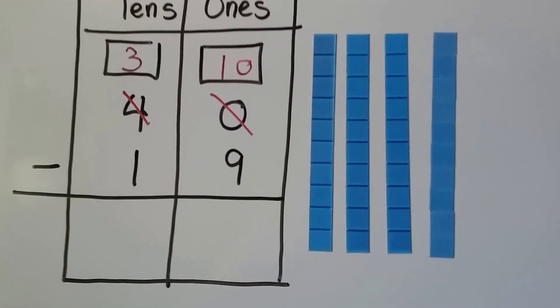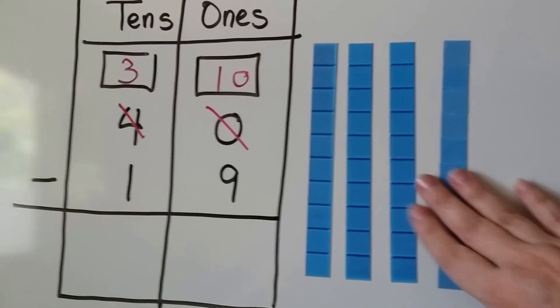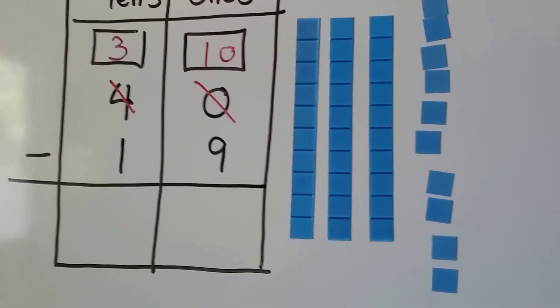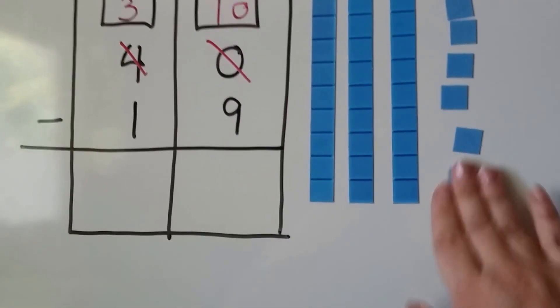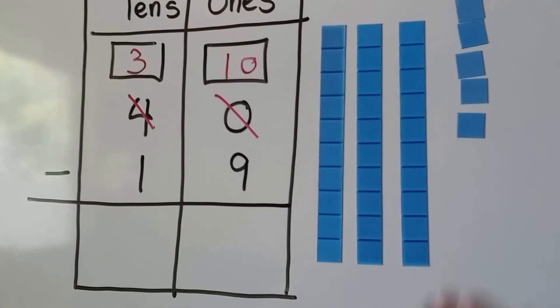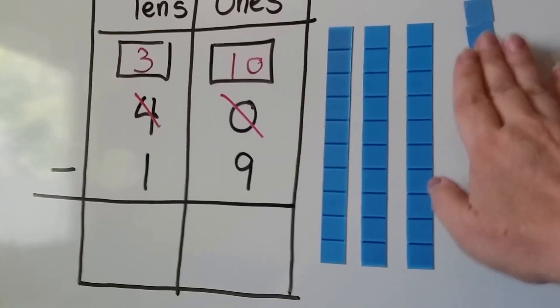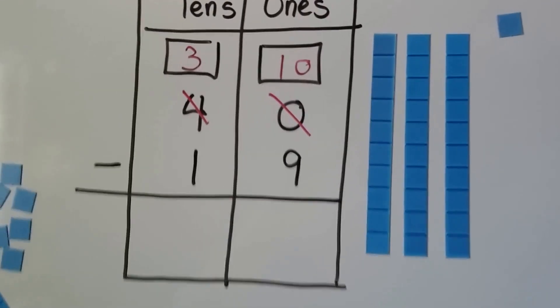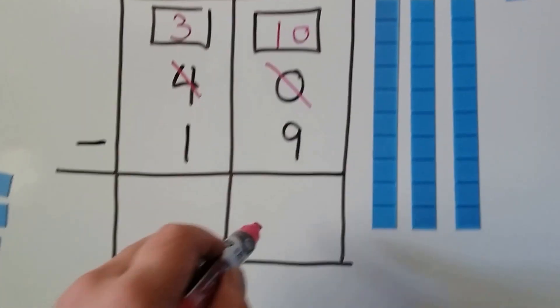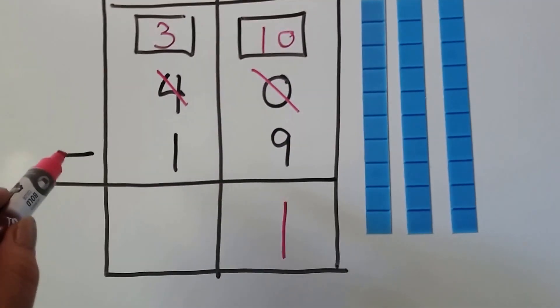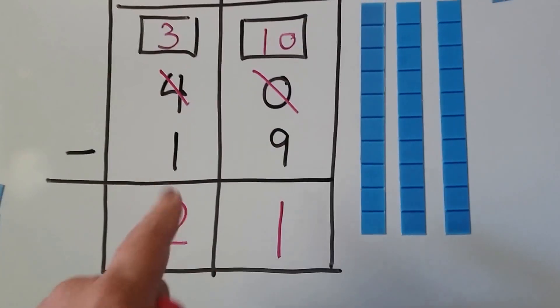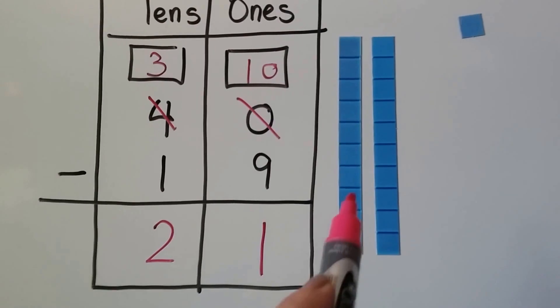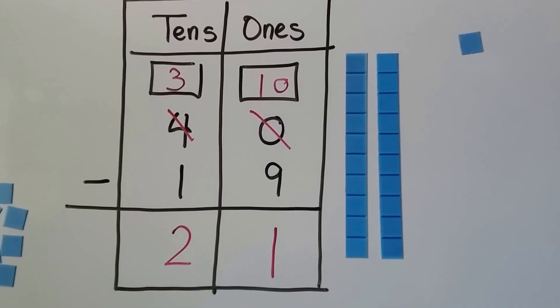We have 4 tens here. We take 1 of them and break it into ones. Now we can take 9 of them away. 1, 2, 3, 4, 5, 6, 7, 8, 9. 10 minus 9 is 1 and 3 minus 1 is 2. We still need to take that 10 away, don't we? We take that 10 away and we see we have 2 tens and 1 one. We did it correctly.